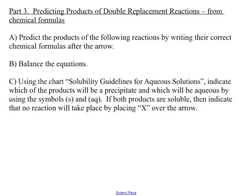Moving to Part 3, where we do the same process but instead of chemical names, we write chemical formulas and also write the balanced equation. We will predict products by writing correct chemical formulas after the arrow, balance the equations using coefficients, and use the solubility guidelines to indicate which products will be a precipitate or aqueous using S and AQ. If both products are soluble, indicate no reaction by placing an X over the arrow.